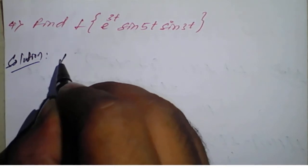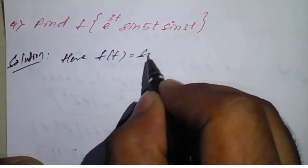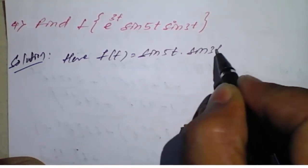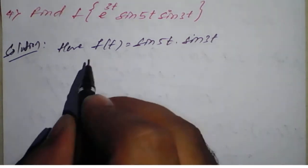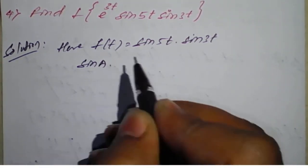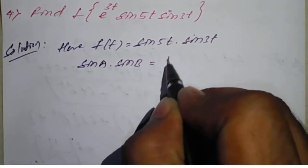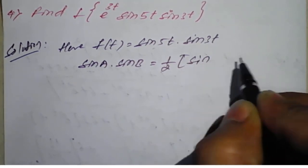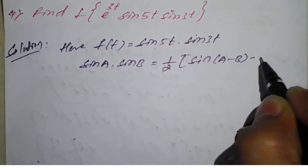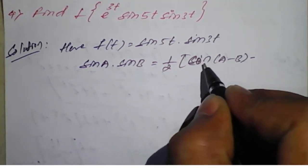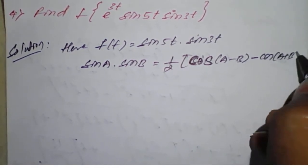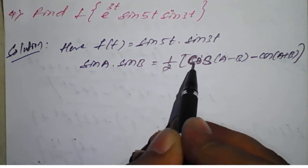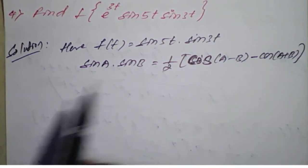Here, our function f(t) is taken as sine of 5t into sine of 3t. We know the formula: sine A into sine B is equal to one-half times cos(A minus B) minus cos(A plus B). We will apply this formula here.